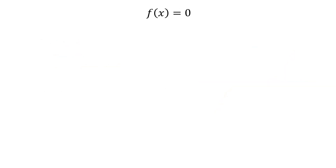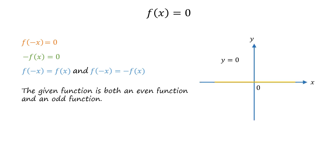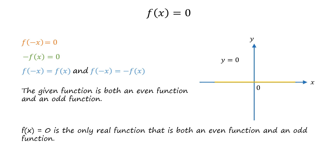Now consider the function f of x equals 0. Pause this video and try to figure out whether the given function is even, odd, or neither. Since f of x is a constant function, f of negative x also equals 0. Since f of x equals 0, negative of f of x also equals 0. Therefore, f of negative x equals f of x as well as negative of f of x. So the given function is both even and odd. The graph of this function lies along the x-axis and is symmetric about the origin as well as the y-axis. In fact, f of x equals 0 is the only real function that is both an even function and an odd function.